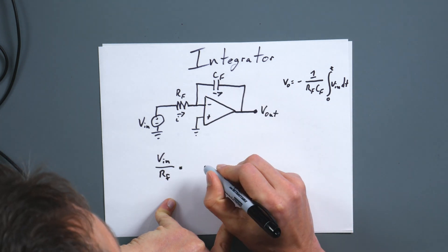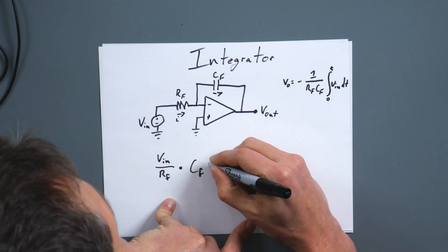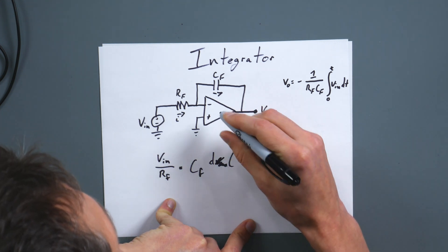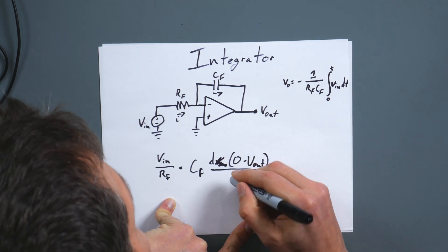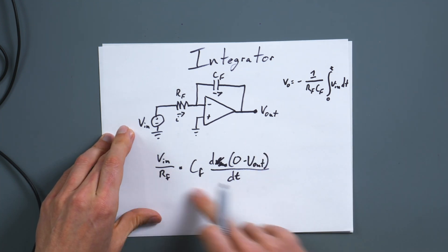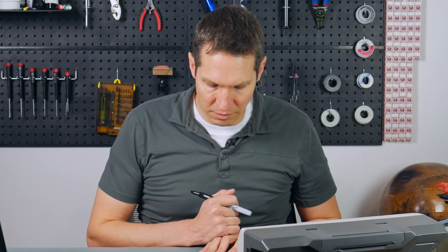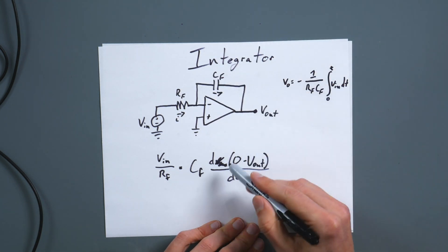We know that current is going to be the same on the capacitor side, but we're not going to use Ohm's law because Ohm's law doesn't work with capacitors. We use the fact that current through a capacitor is C times the change in voltage over the change in time. So we will have C_F times dV_out — that's zero minus V_out — over dT. This is our initial equation relating these two currents together. That makes sense: current going through there is the same as the voltage change over there times C_F.